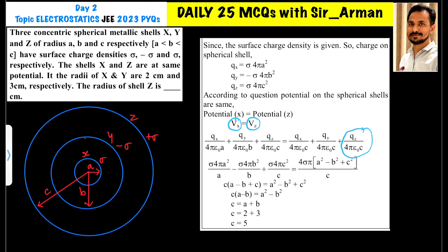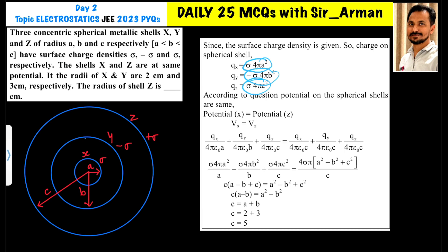We equate the two potential expressions. The factor 4π epsilon_0 (from k = 1/4πε₀) cancels throughout. Substituting the charges: Q_x = σ·4πa², Q_y = −σ·4πb², Q_z = σ·4πc². The common factors 4π and σ cancel from both sides. On the left-hand side we are left with a/a − b/b + c related terms simplifying to a − b + c. On the right-hand side we get (a² − b² + c²) / c.